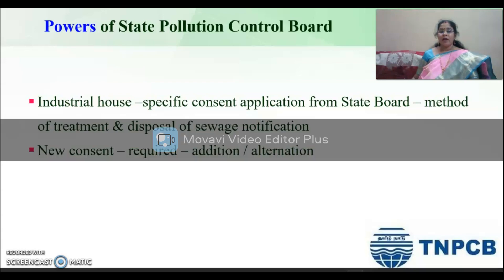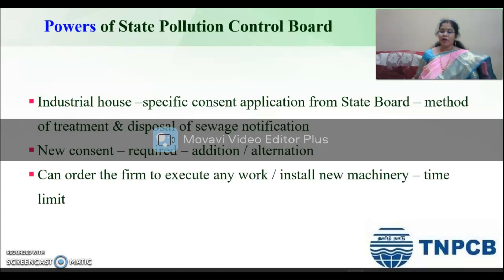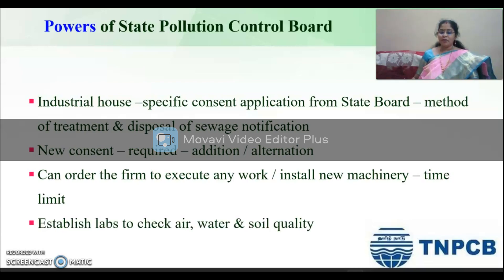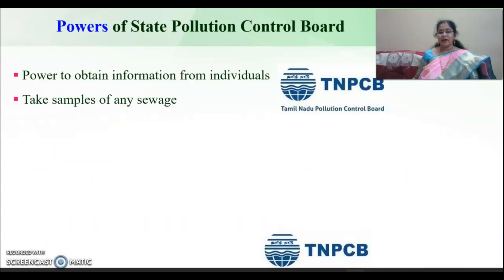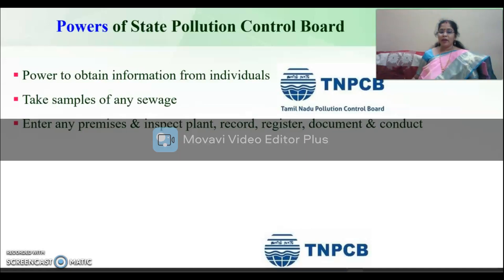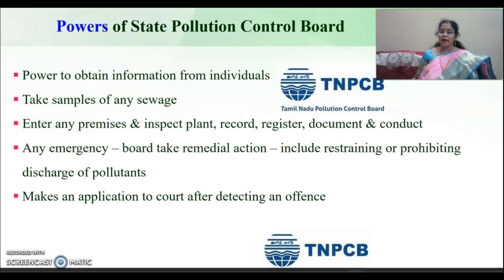The powers of the Central and State Pollution Control Boards include: industrial houses must seek specific consent with any application form with regard to pollution; the boards can adopt any method of treatment at any time; they can carry out inspections and order firms to execute work or install new machinery within a time limit; they can establish labs to check the quality of air, water, and soil; collect, compile, and publish technical and statistical data; obtain information from individuals; take samples from any sewage; enter any premises and inspect plants, records, registers, documents, and contacts; and conduct emergency board meetings and take remedial action including restraining or prohibiting the discharge of pollutants.